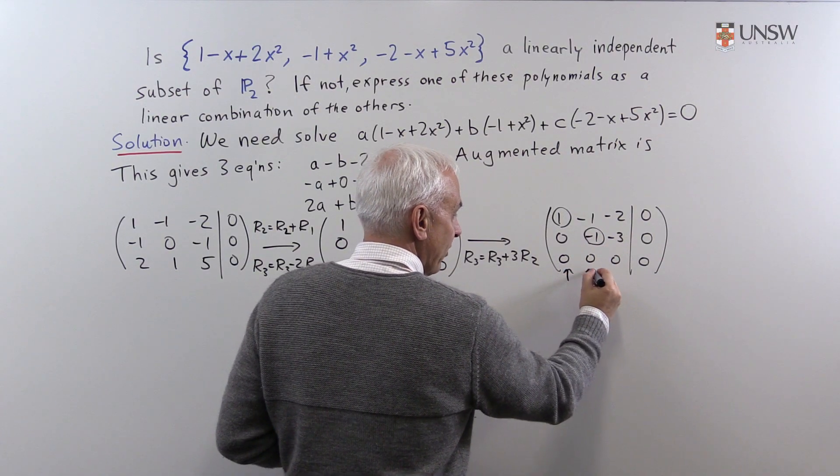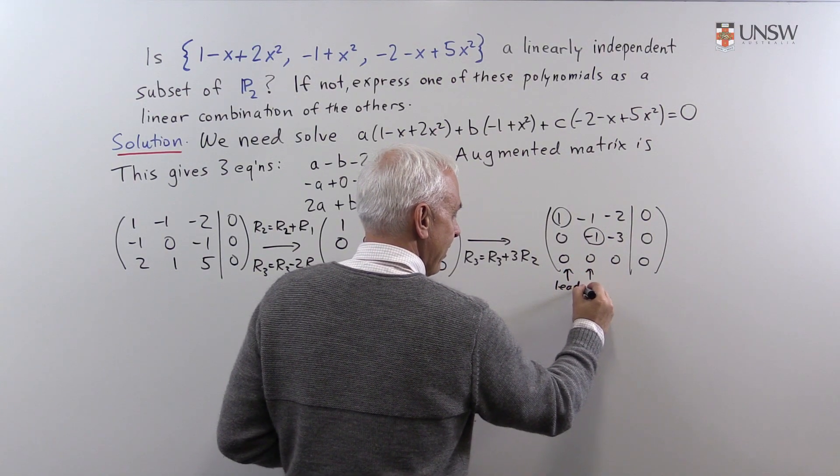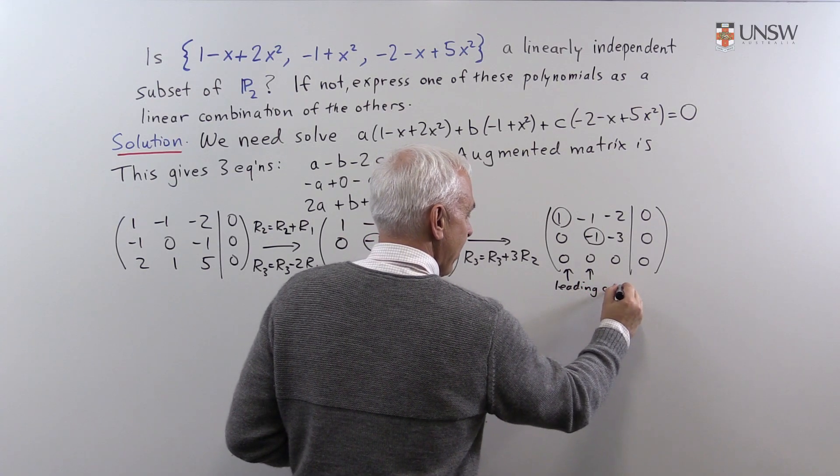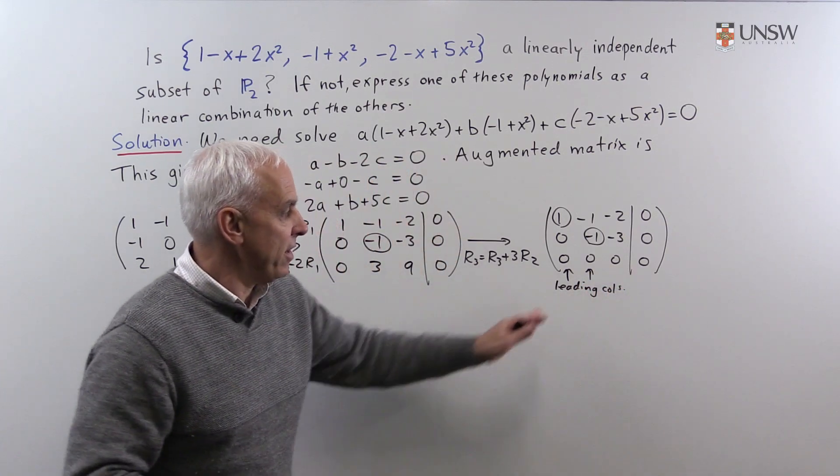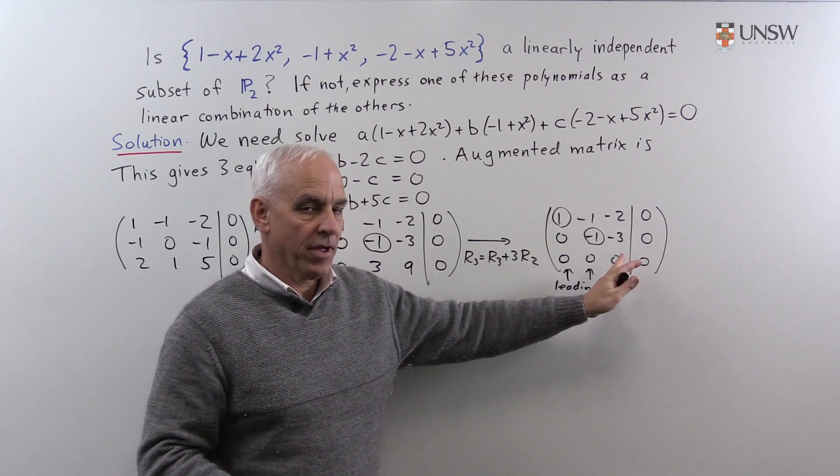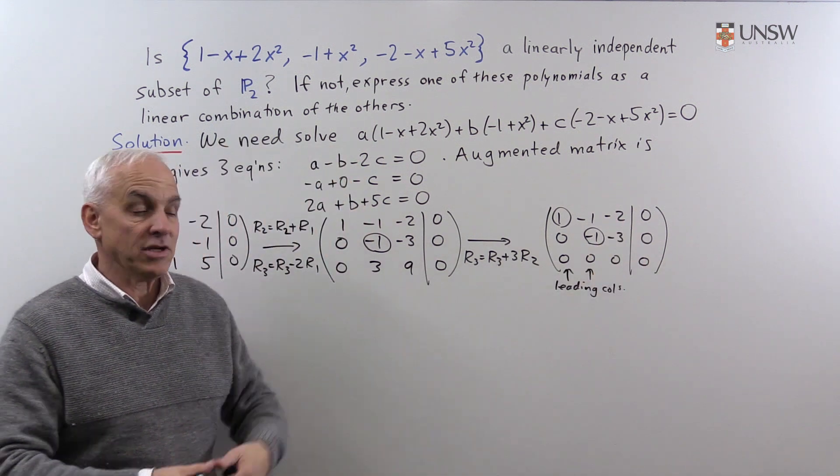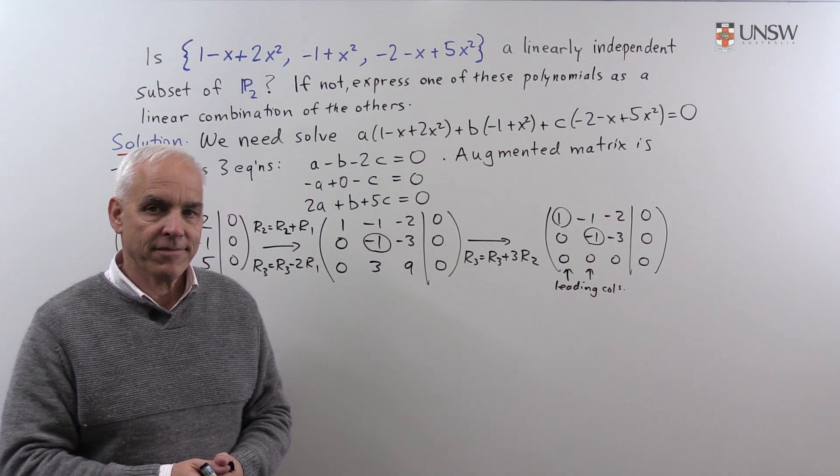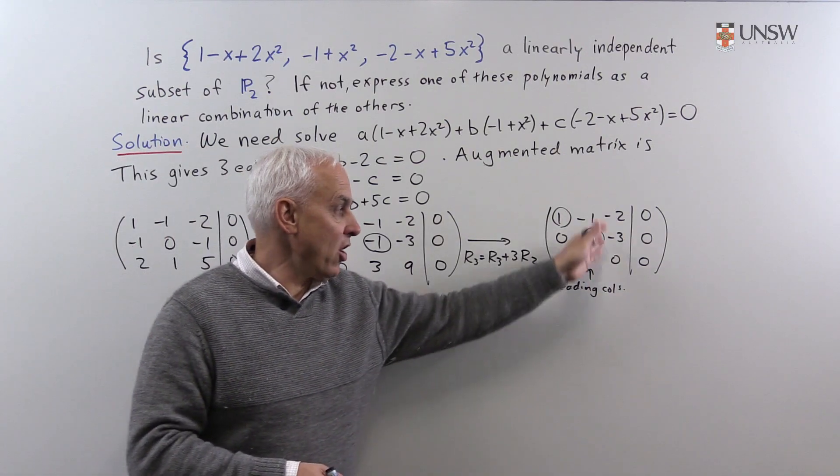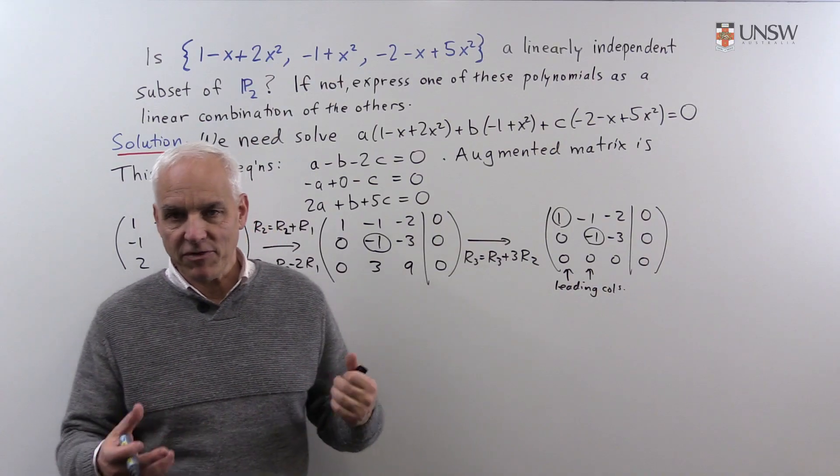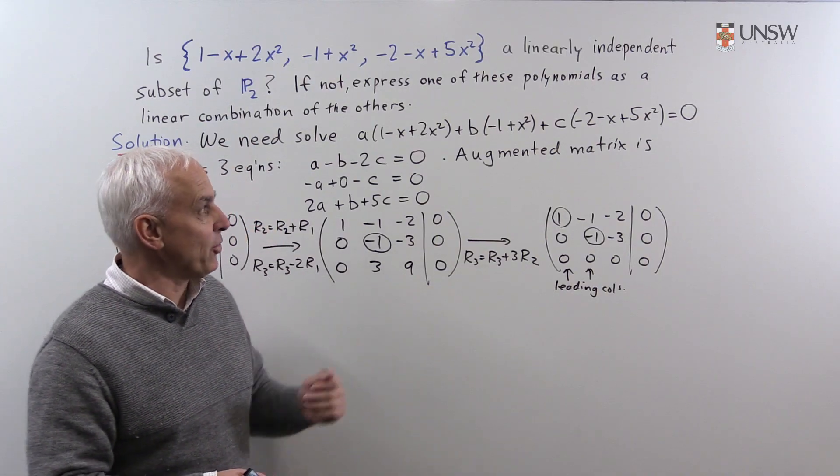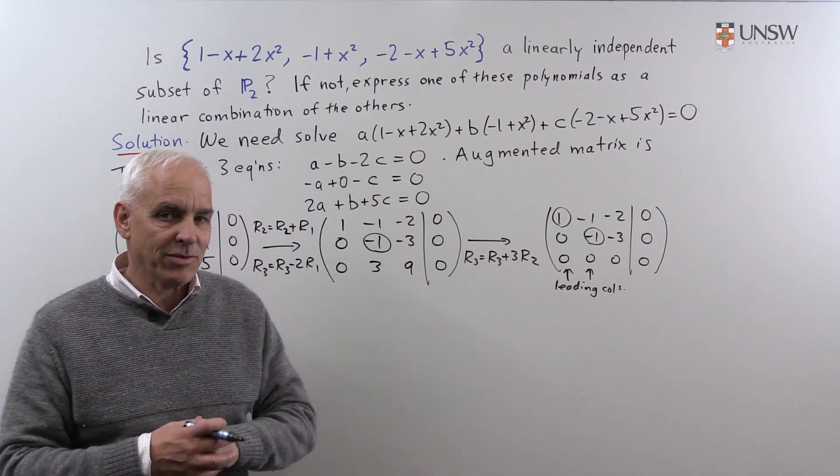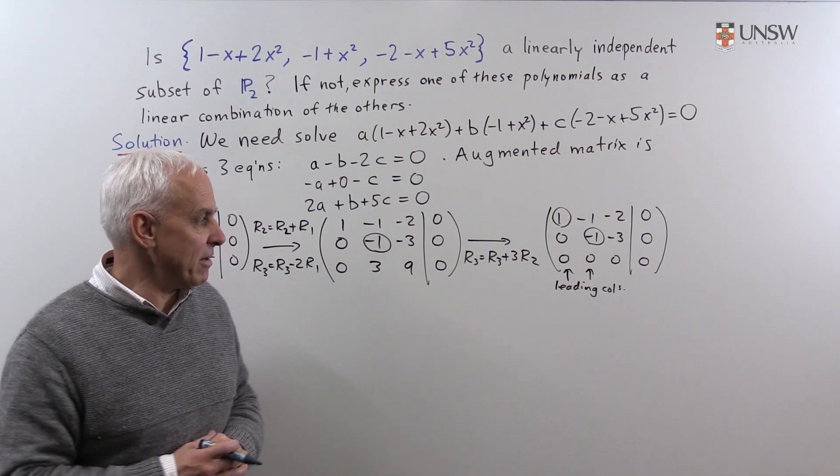There are solutions because here are the leading entries. Here are the leading columns. And there is one non-leading column. The one non-leading column means that there's a parameter... The non-leading column tells us that there's a one-parameter family of solutions.